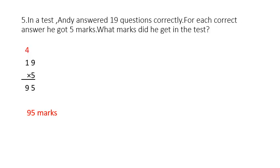Next question, Question number 5. In a test, Andy answered 19 questions correctly. For each correct answer he got 5 marks. What marks did he get in the test? Children, the number of correct answers is 19 and for each correct answer he got 5 marks. So here you have to find out the total marks he got in the test. You multiply 19 by 5.